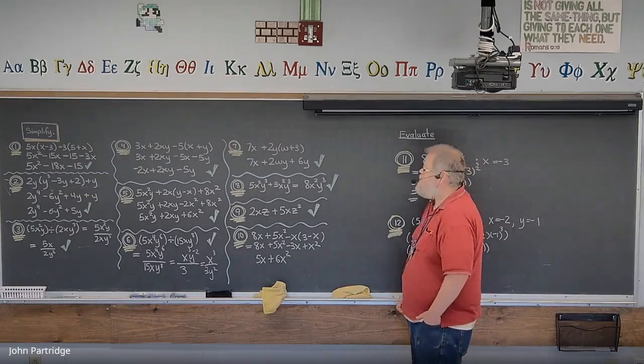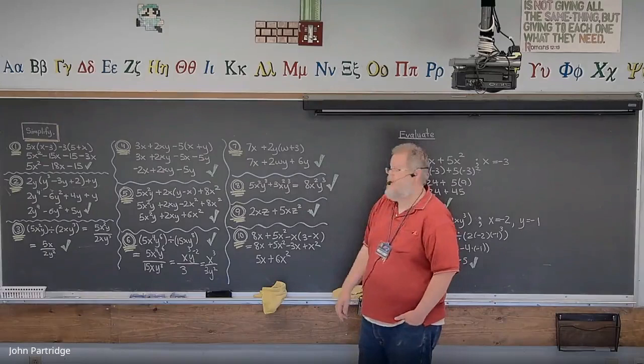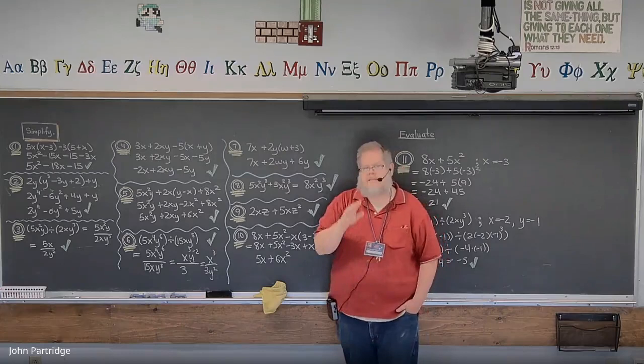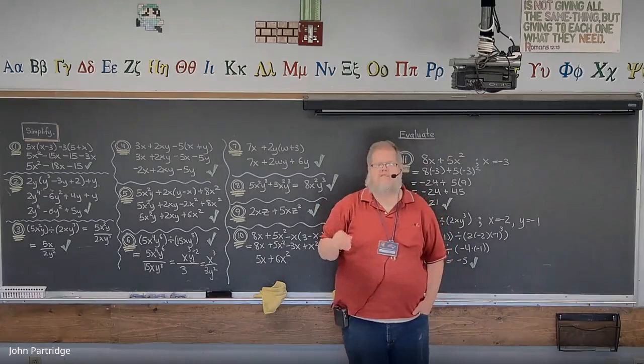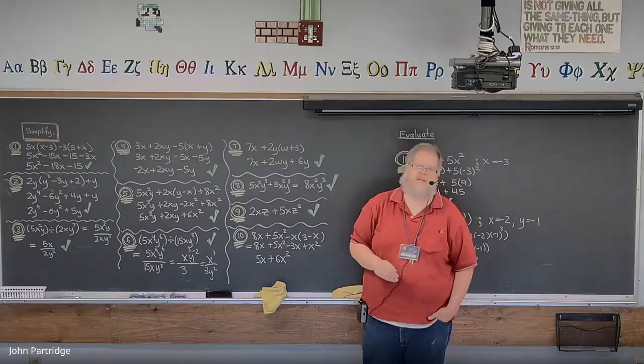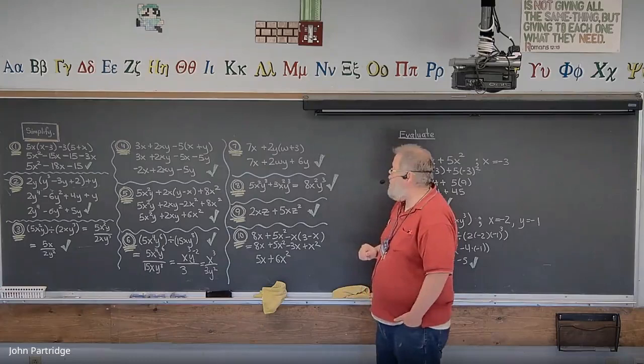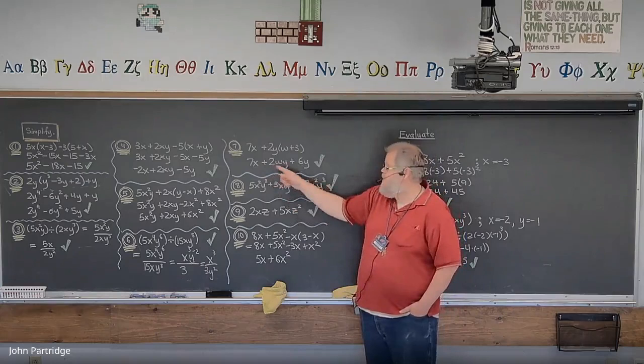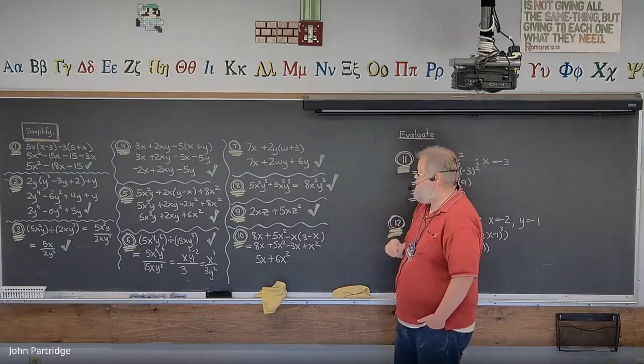Problem 7: 7x + 2y(w + 3). Distributive property: 2y times w is 2wy, and 2y times 3 is 6y. Note — we write 2wy (alphabetical order) rather than 2yw, though both are correct. Are there any like terms? No. Final answer: 7x + 2wy + 6y.